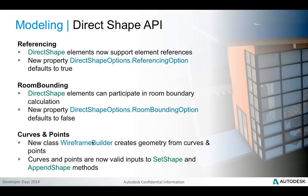This Direct Shape functionality has been enhanced significantly in Revit 2016, providing support for referencing, room bounding, curves and points. Now Direct Shape elements support element references, enabling alignment and dimensioning of these objects and also enabling Direct Shape elements to host face-based family instances. There's a new DirectShapeOptions referencing option property to control this behavior. Direct Shape elements can also participate in room boundary calculations. Finally, we can now include one-dimensional and zero-dimensional curves and points into Direct Shapes using the new WireFrameBuilder class.